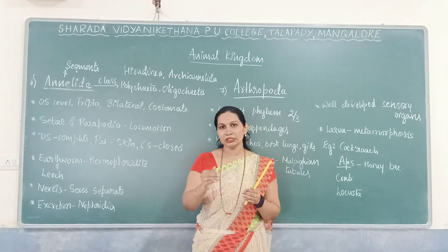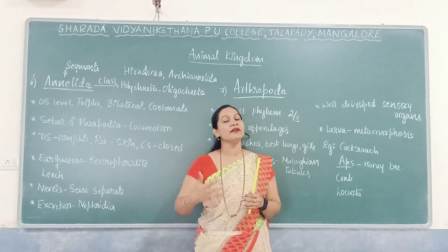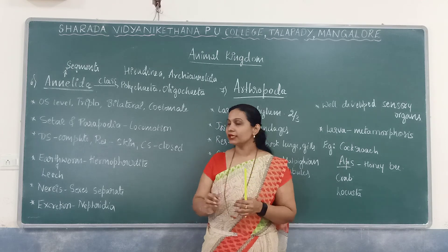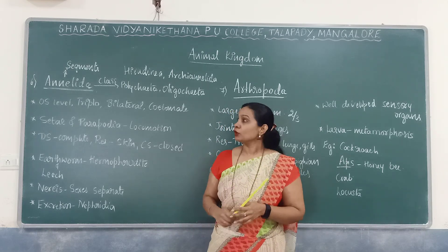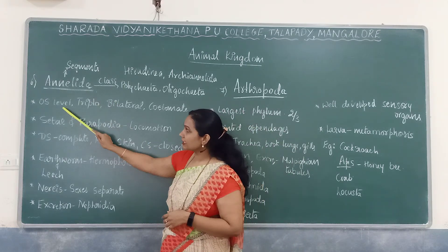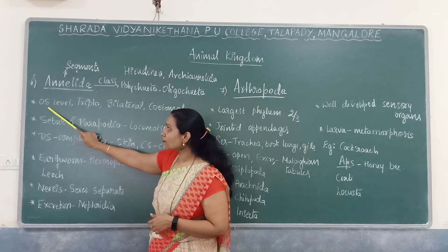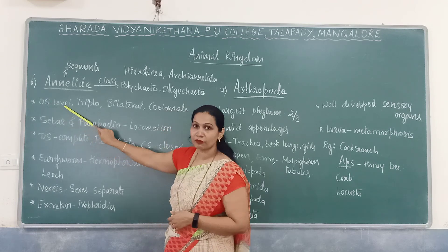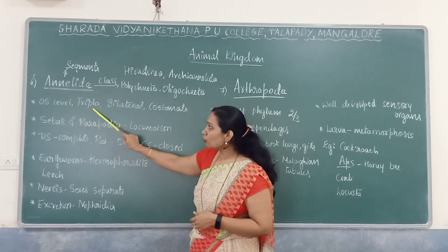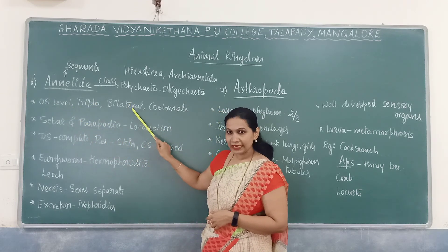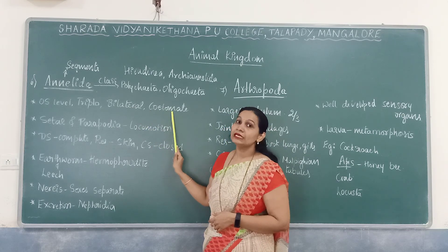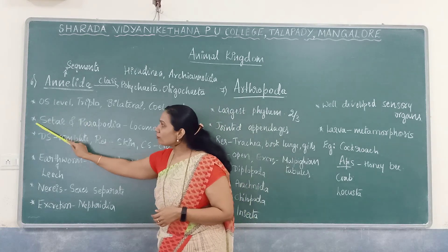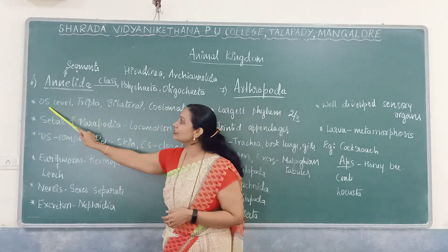In the earthworm there is a presence of segments — about 100 to 150 segments in their body. That is why the name Annelida. Annelida members have organ system level of organization, are triploblastic, have bilateral symmetry, and are coelomate organisms.